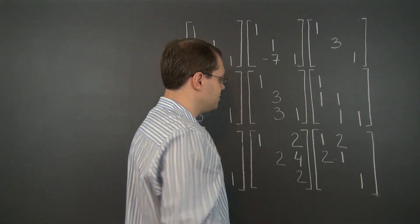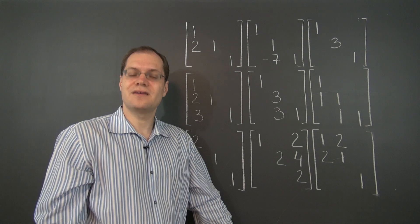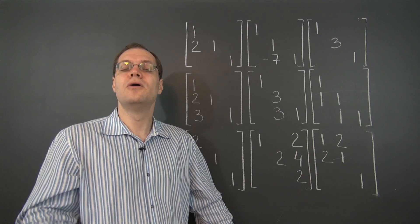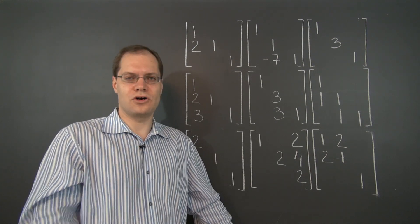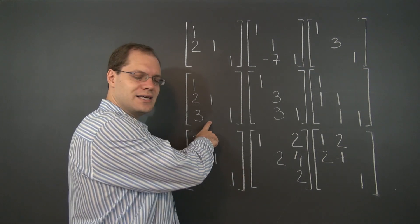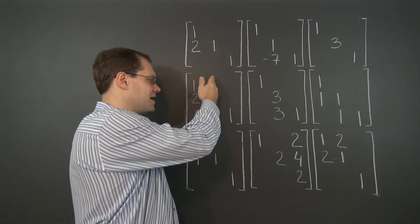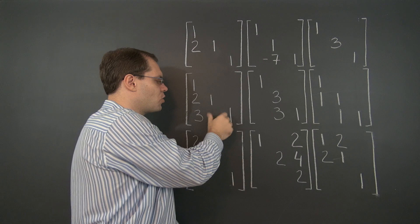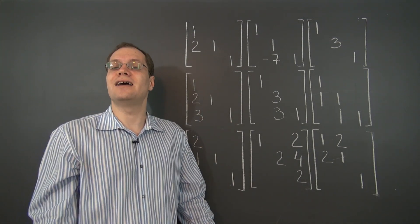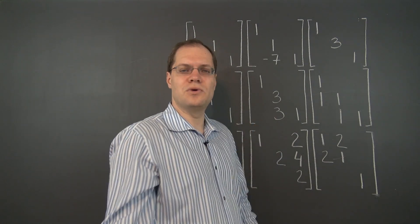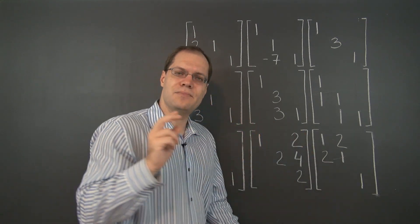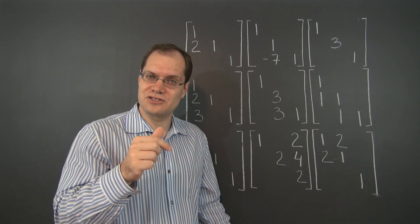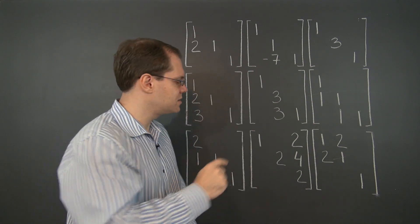Moving on to this matrix — it's two operations away from the identity, but what those operations are depends on the order in which you choose to do them. It wasn't the case in the previous matrix where order didn't matter. In this matrix, it will matter. From the rows point of view, let me do it in two different ways — you'll see the operations are actually different depending on order.